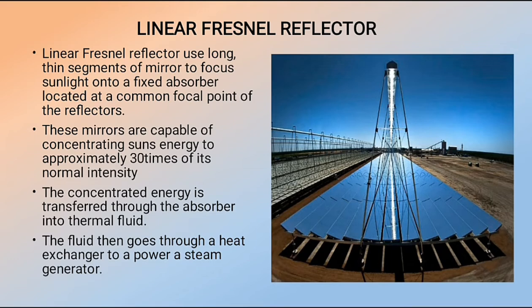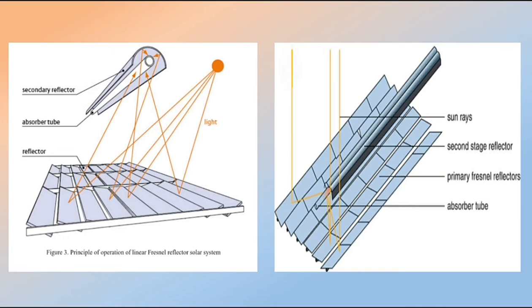The linear Fresnel reflector is similar to the power tower but uses a series of ground-based flat or curved mirrors to focus sunlight onto a fixed absorber located several meters above the mirror field. It is a single-axis tracking, line-focusing system. The absorber consists of long, selectively coated tubes through which flowing water is heated and sent to a steam generator to drive a turbine. A secondary reflector mirror refocuses sun's radiation onto the absorber to heat more water.